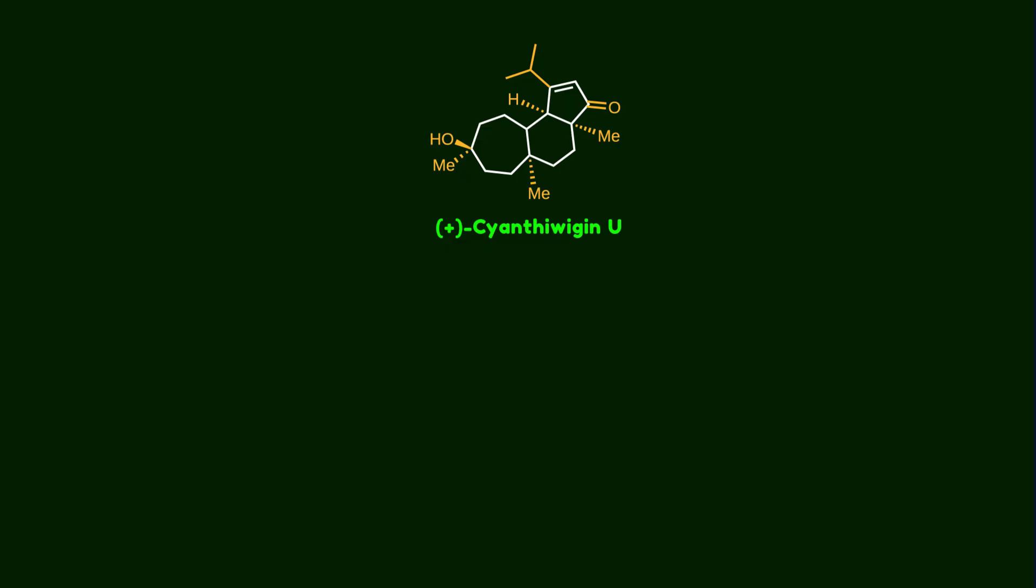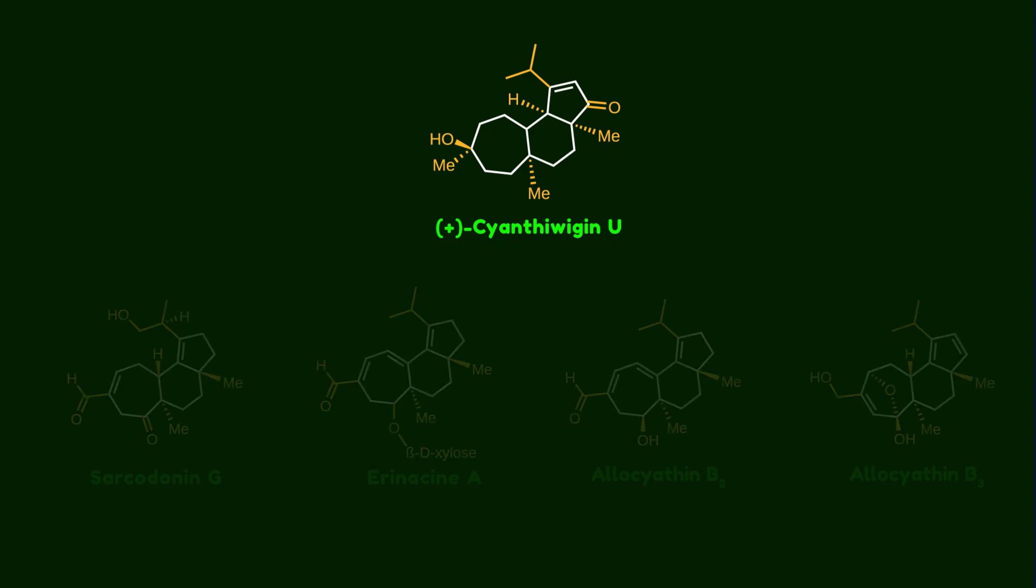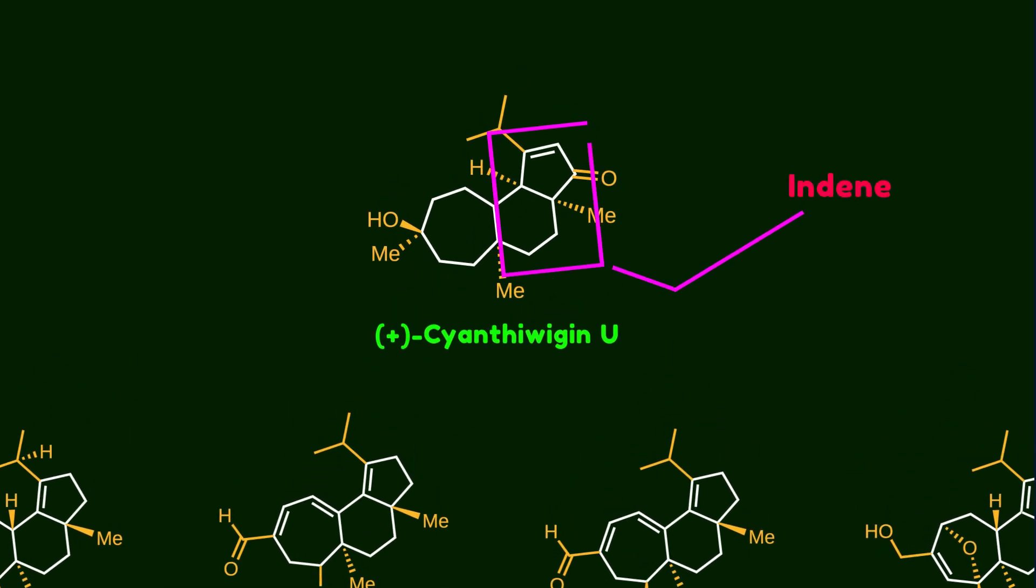This compound belongs to the diterpenoid family and was isolated from a Jamaican sponge back in 2002. As you can see, there are several structurally related compounds. All of them share a similar core structure, where an indane skeleton is fused to a cycloheptane ring.